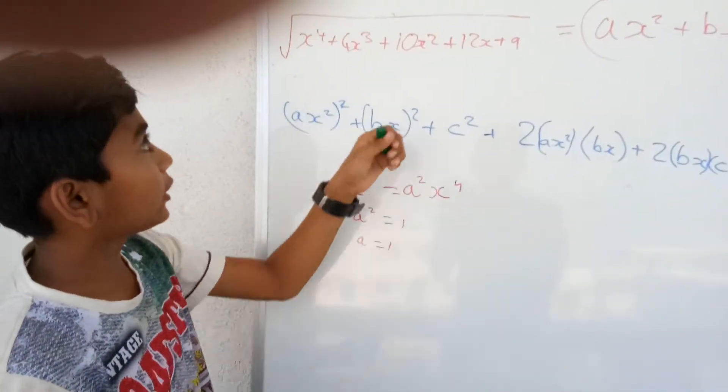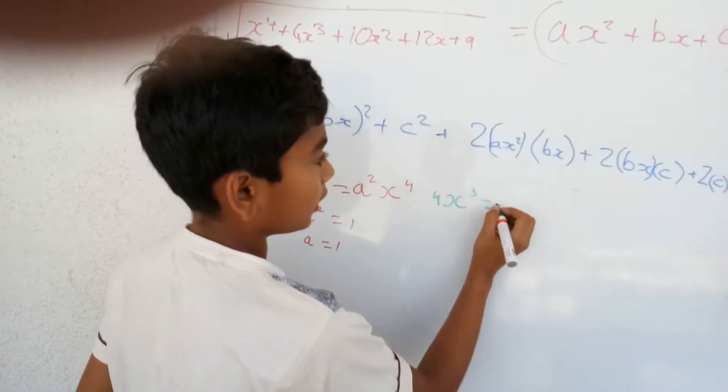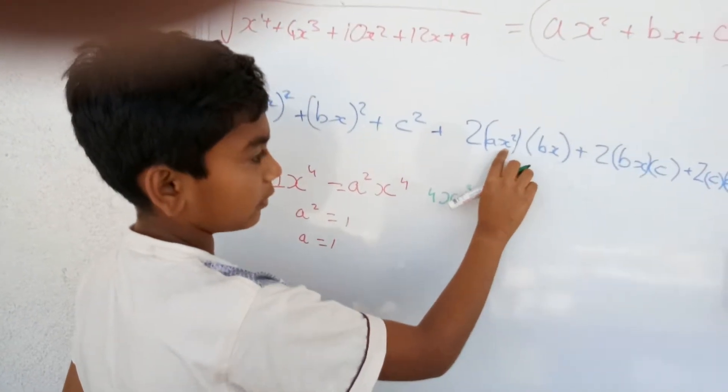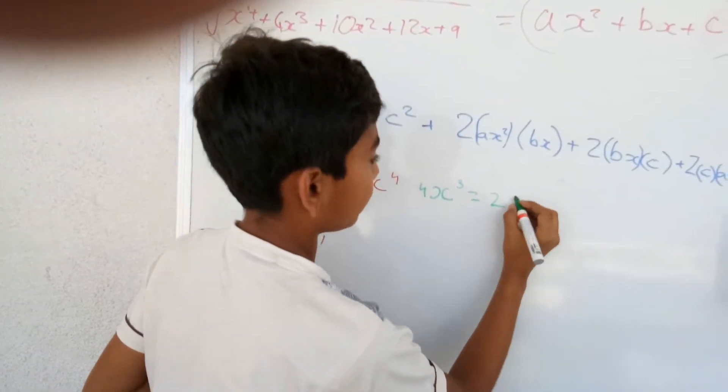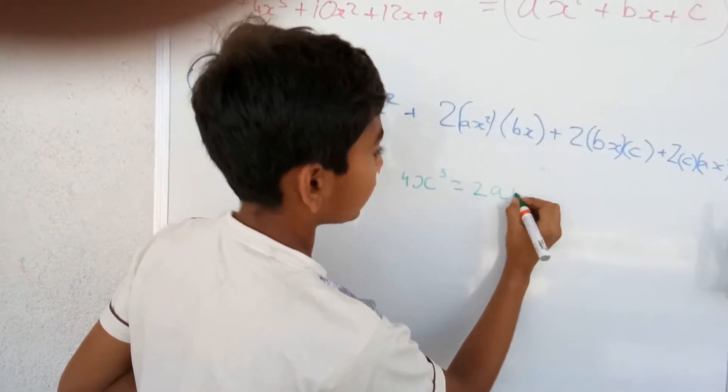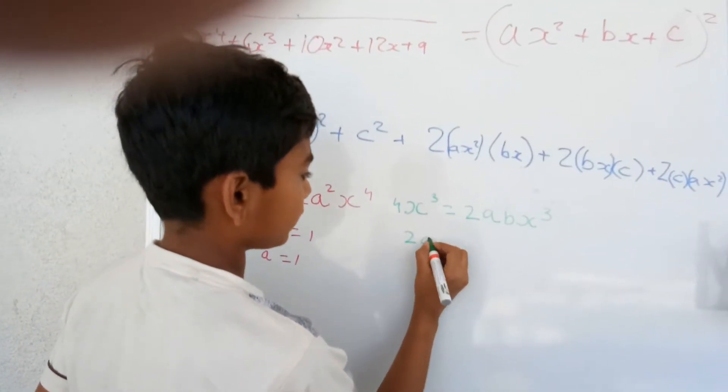Now, we will look at the cubic part. Cubic part is equal to this part because this is the only way we can get x cube. So, 4x cube is equal to 2abx cube. 2ab equals to 4.